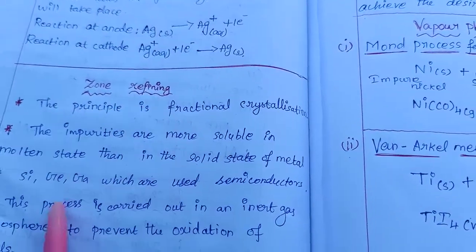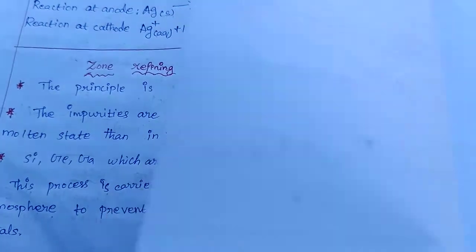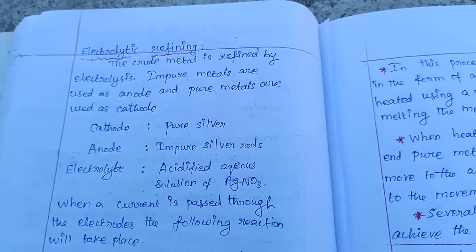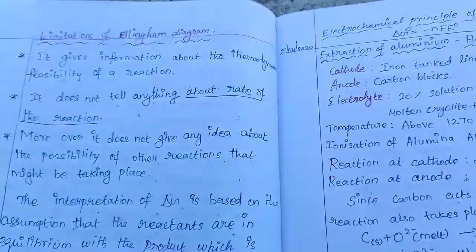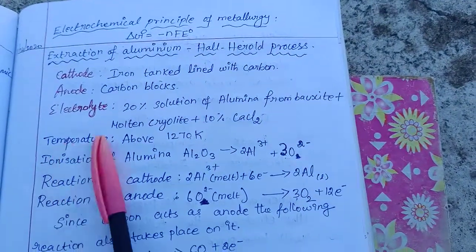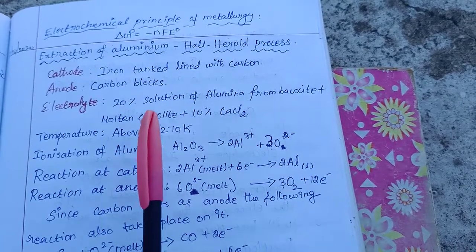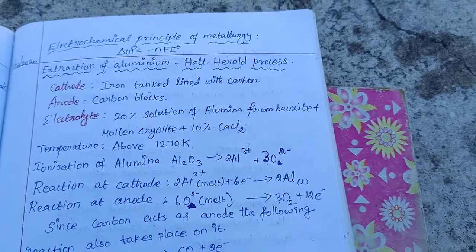To summarize: Mond process for refining nickel, zone refining for semiconductors, electrolytic refining for silver, gold and copper, and the Hall-Herold process for extraction of aluminum from bauxite. Thank you, students.